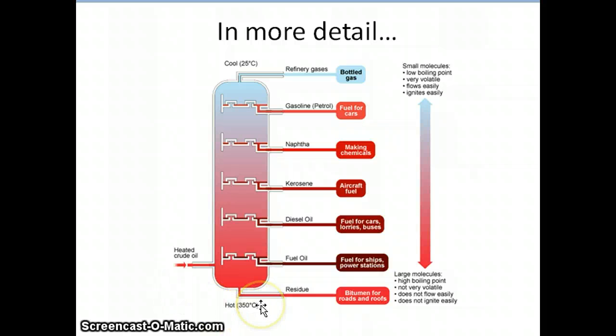Whereas the fractions with higher melting points rise up and condense nearer to the bottom because they condense at higher temperatures, making kerosene, diesel oil, etc. These are the long chain molecules.